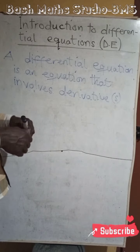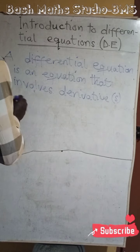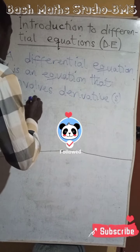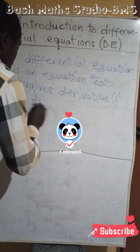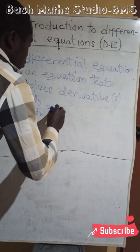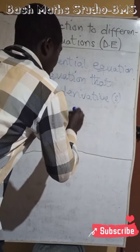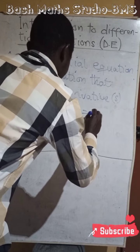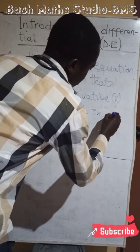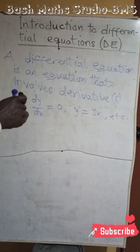We will cite examples of differential equations. For example, you may have dy/dx equals zero, y prime equals 3x, and many more — you can have a lot of them.